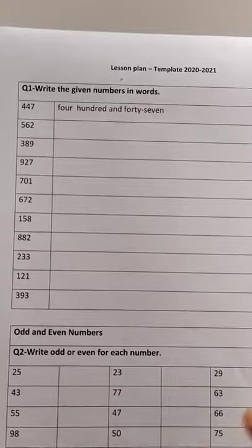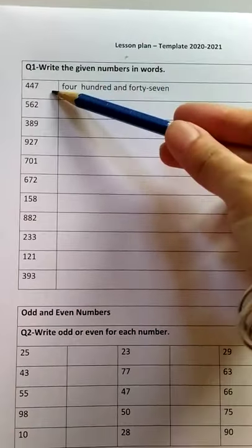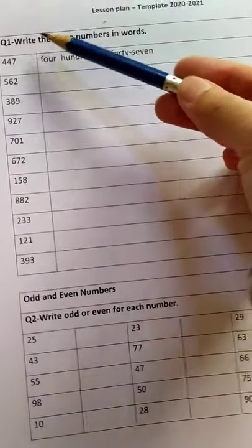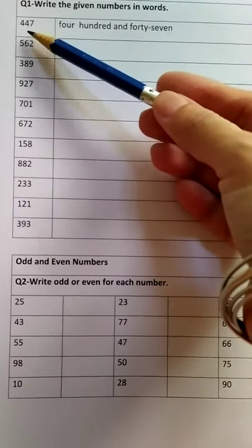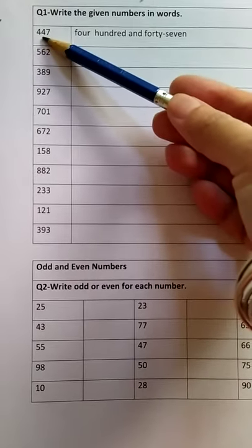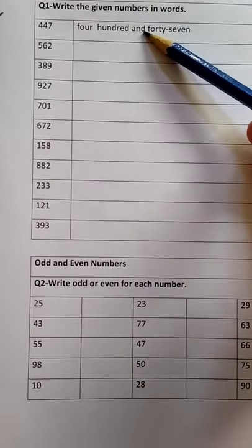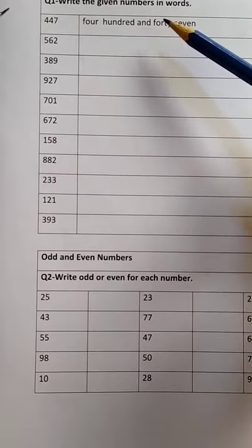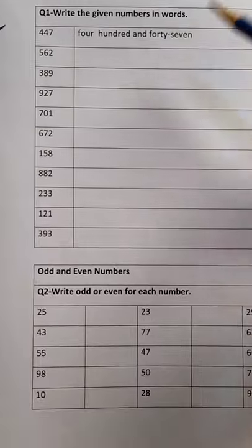So what is the question? Write the given numbers in words. So what are the given numbers? 447. So how we are going to read it? We will read it 447. And do not forget to write AND. 447. And there is always a hyphen between two digit numbers.